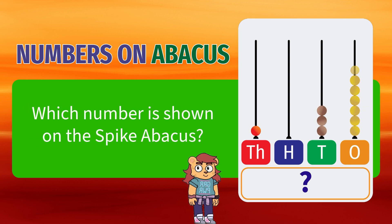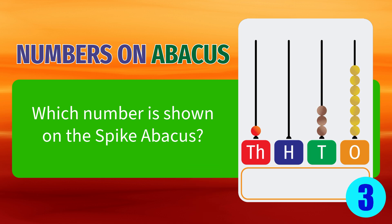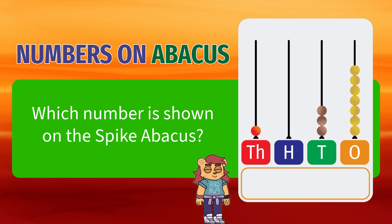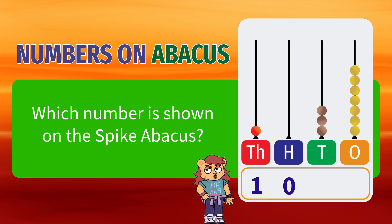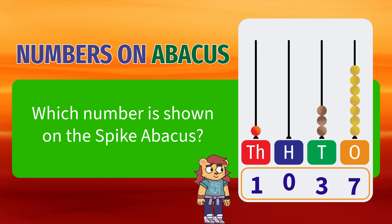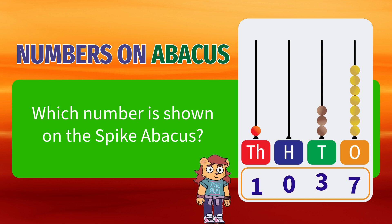What number is shown on the spike abacus? One thousandths, zero hundredths, three tens, seven ones. The number is 1037.